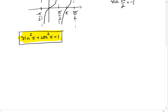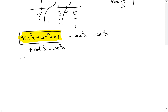If we divide each term by sine squared of x, we get 1 plus cotangent squared of x equals cosecant squared of x. If we divide by cosine squared of x — the one highlighted in yellow — we get tangent squared of x plus 1 equals secant squared of x.